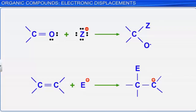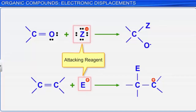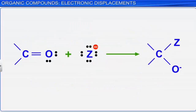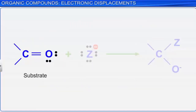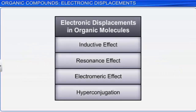Most attacking reagents carry either a positive or a negative charge. Hence, for a reaction to take place on the substrate, it must possess oppositely charged centers, which is made possible by the partial or complete displacement of the bonding electrons. The factors which influence the electron density in the substrate are: inductive effect, resonance effect, electromeric effect, and hyperconjugation.